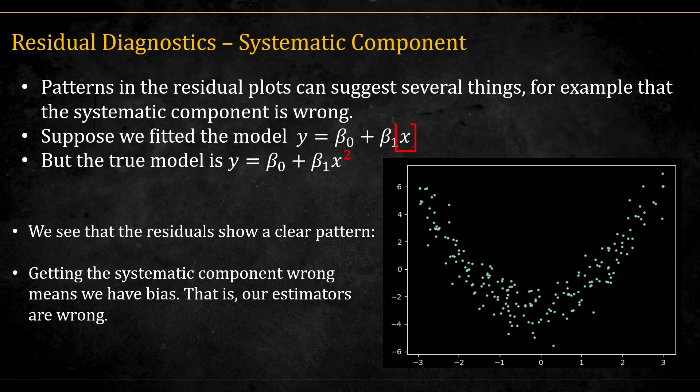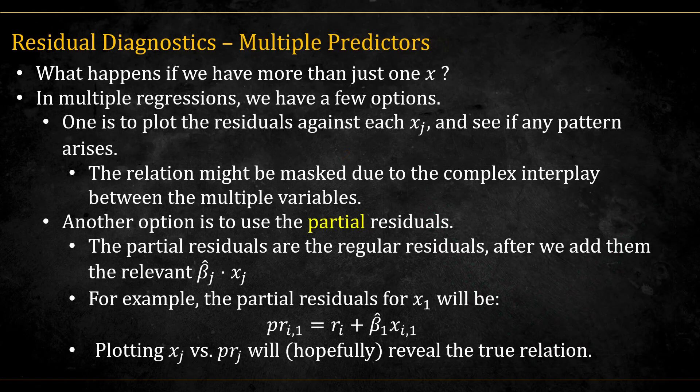For example, suppose we used x in the fitted model, but the true model uses x squared. The residual plot in this case shows a clear pattern. Getting the systematic component wrong means that our beta estimators are also wrong. The example from before is when we have a simple linear regression with a single x.